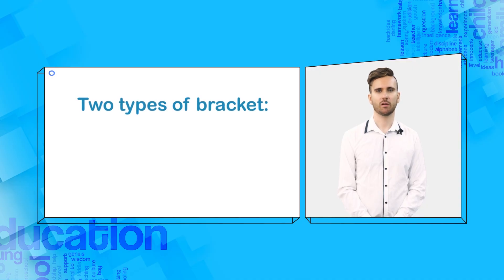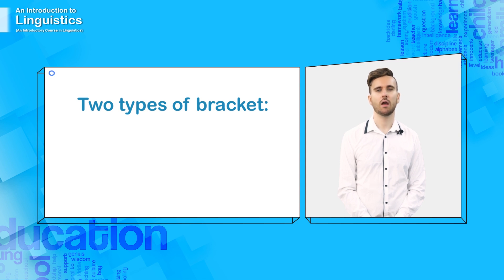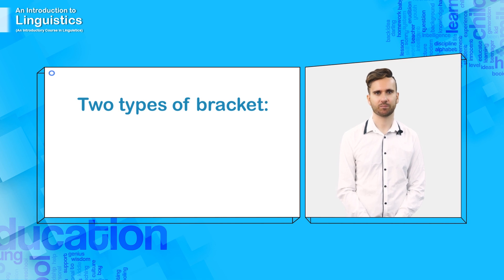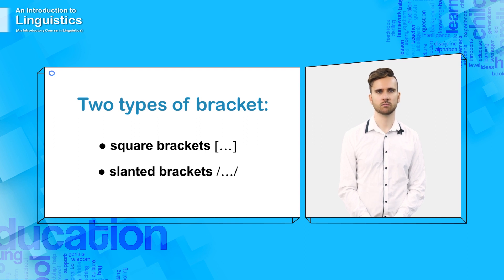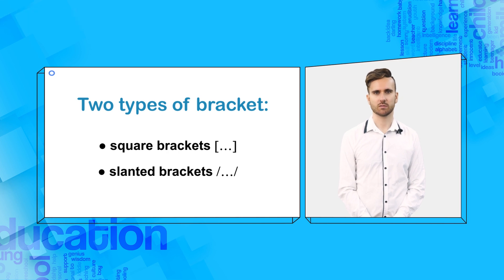By now, you can see that there is an important difference between the category of a sound and the different ways to actually pronounce that category. To represent this difference, there are two types of brackets: square brackets and slanted brackets. We will continue this discussion in the next episode.